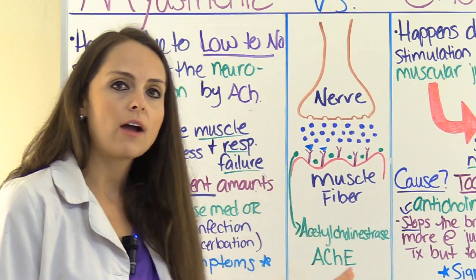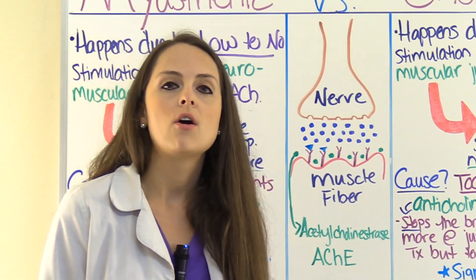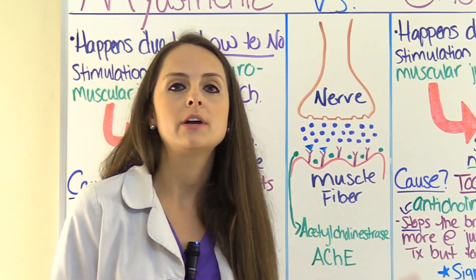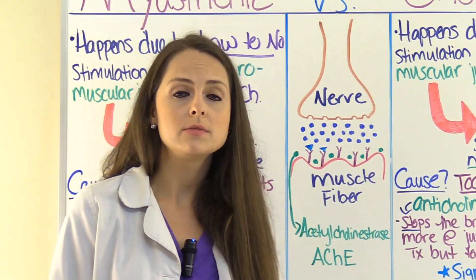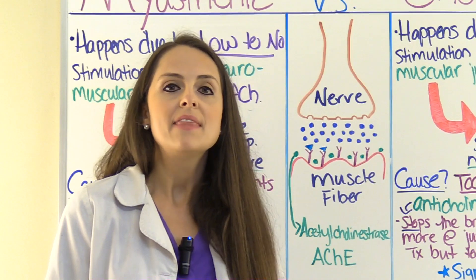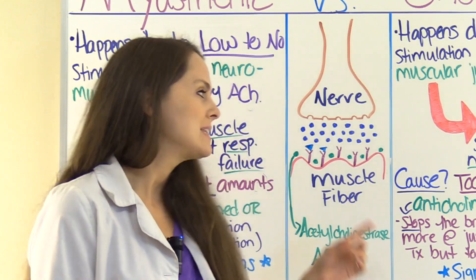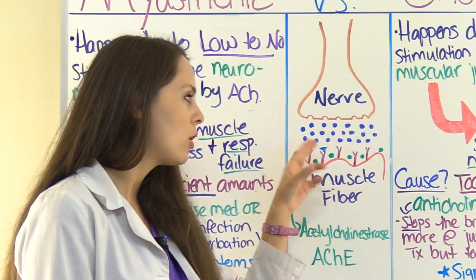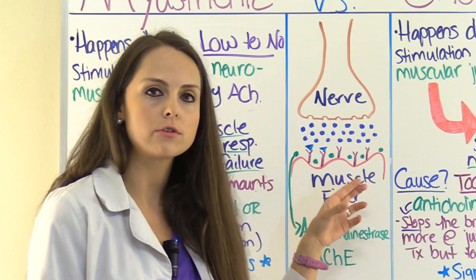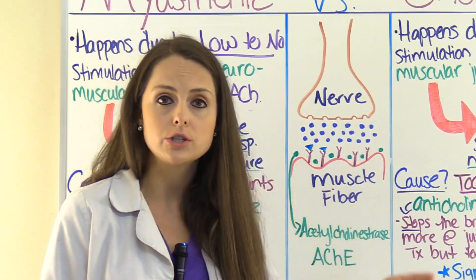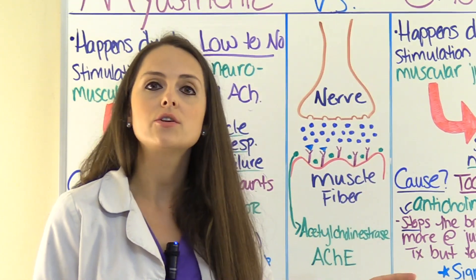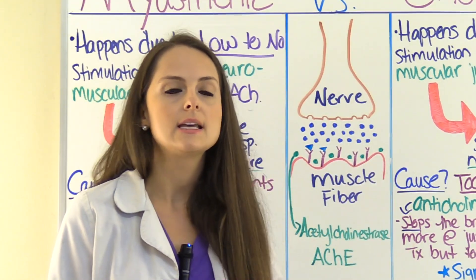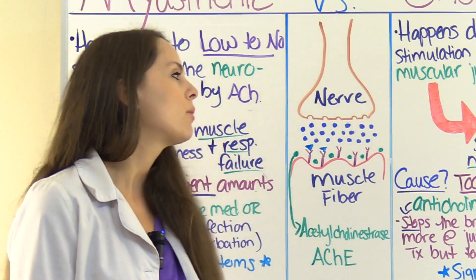In myasthenia gravis, what's going on is that antibodies have been created by the immune system that attack these receptors. So you don't have all this acetylcholine going to those receptors like you should. Hence, you're going to get muscle weakness — that's a big problem.